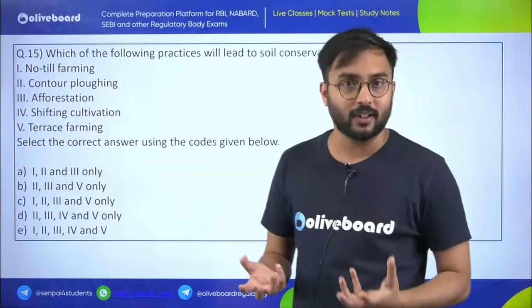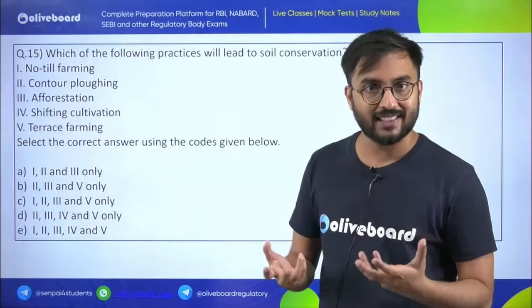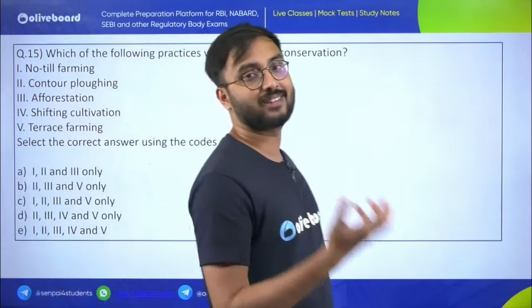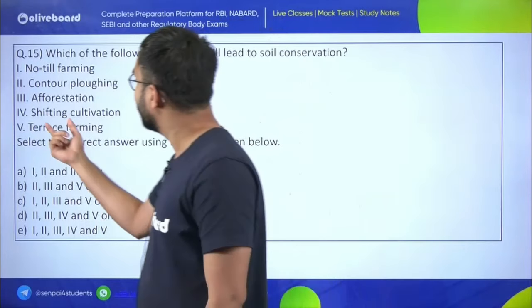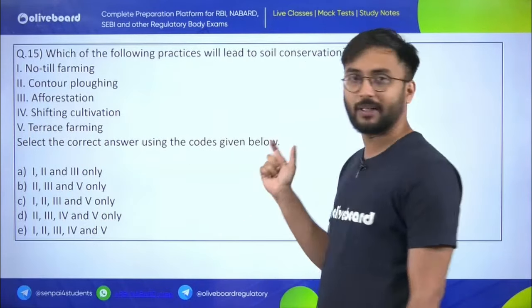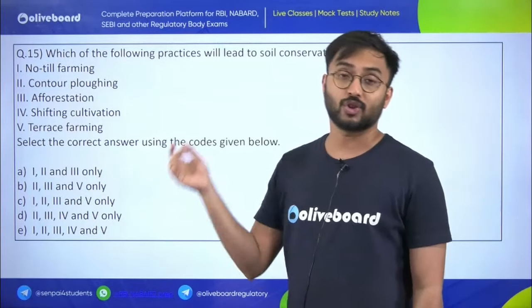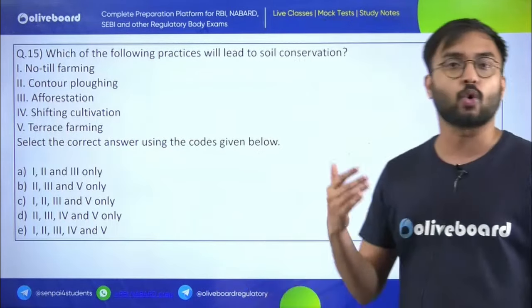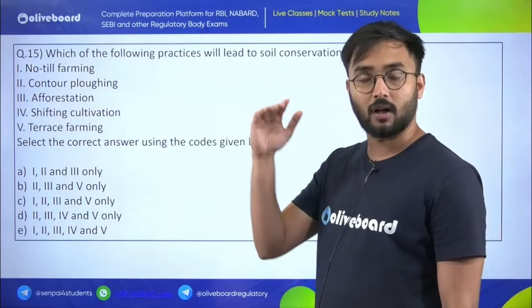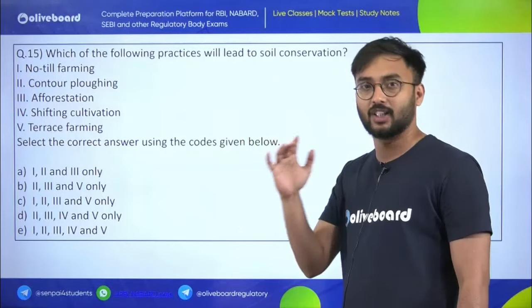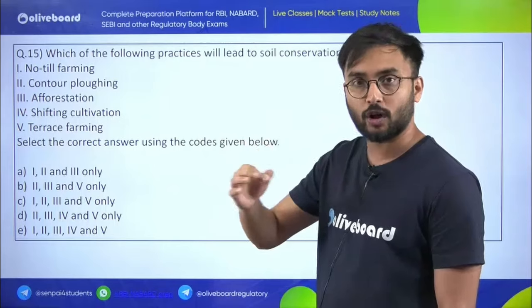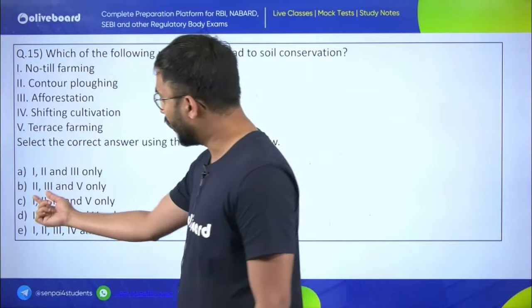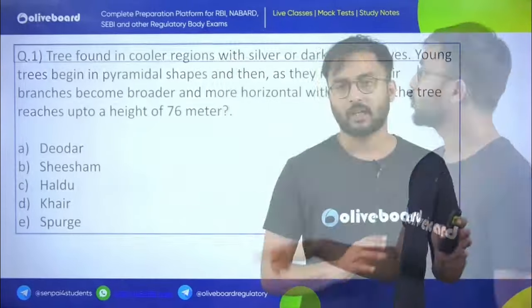Question fifteen: which practices lead to soil conservation? No-tillage farming — yes, it is the most sustainable tillage practice. Contour plowing — yes, it helps water retention, seepage, and rainwater harvesting. Afforestation — yes, more vegetation improves groundwater recharge. Shifting cultivation — no, trees are felled and burned, not conservation. Terrace farming — yes, creates contours on slippery slopes to prevent soil erosion. Answer is C: one, two, three, and five.